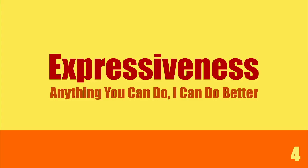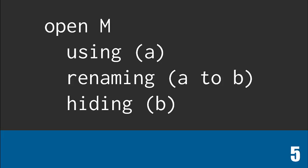The first principle is to be expressive. This is kind of obvious because you do want to make sure that you can do the things that you could do in other popular programming languages. Here is some pseudo-code that is opening a namespace M using only the binding A, or renaming the binding A to B, or hiding the binding B. So already from this syntax, in order for our language to be expressive, we should also be able to select some bindings from the namespace, rename bindings, or hide some of the bindings.